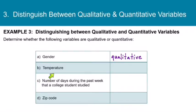What about temperature? Well, temperature is definitely measured in numbers. So now the question is, does subtracting give us any useful information? Yes, I can subtract today's temperature from yesterday's temperature and find out how much warmer or cooler it is. And so temperature is going to be a quantitative variable.